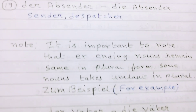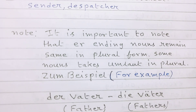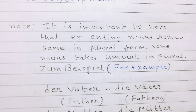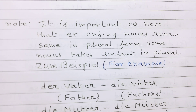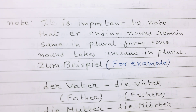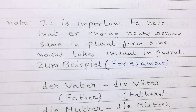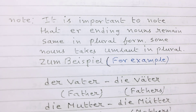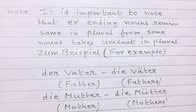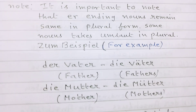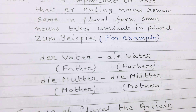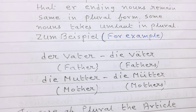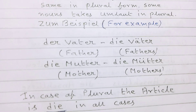Now, it is important to note that -er ending nouns remain the same in plural form. Some nouns take an umlaut in plural. For example: der Vater, die Väter — father, fathers.